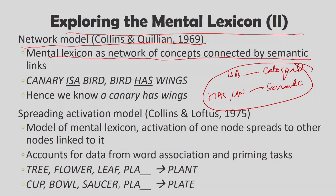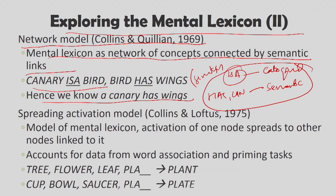In the network model, concepts are connected by semantic or categorical links. For example, 'canary is a bird' expresses a categorical relationship, while 'bird has wings' and 'birds can fly' express semantic relationships. From 'canary is a bird' and 'bird has wings' we can deduce that 'canary has wings' — this is how the mental lexicon is arranged. Members of a lower category inherit all properties of higher-level categories, but the reverse is not true: not all animals have wings just because canaries do.